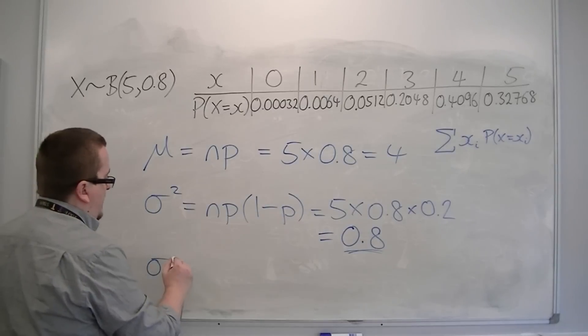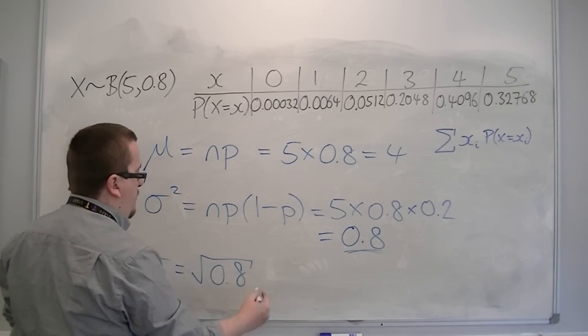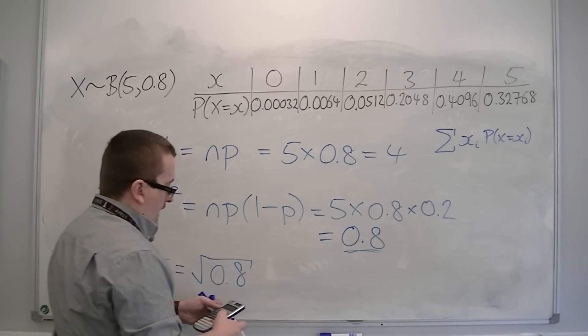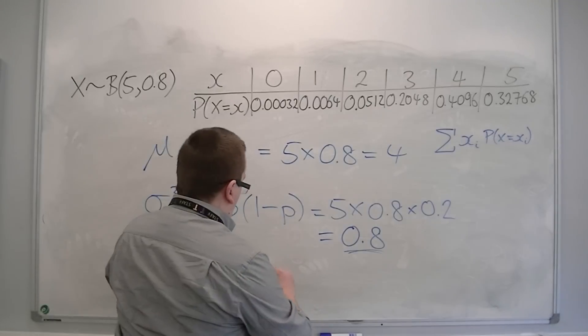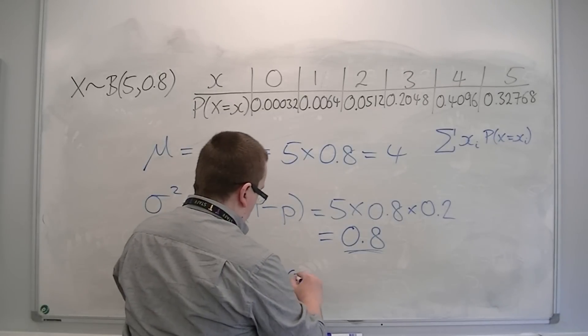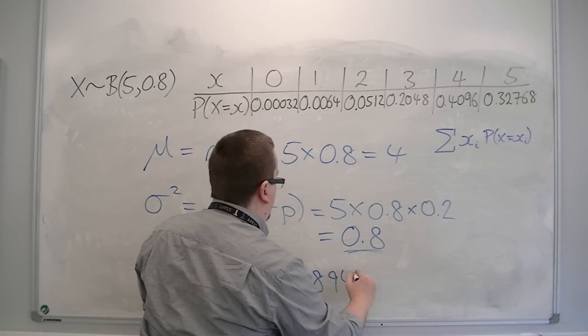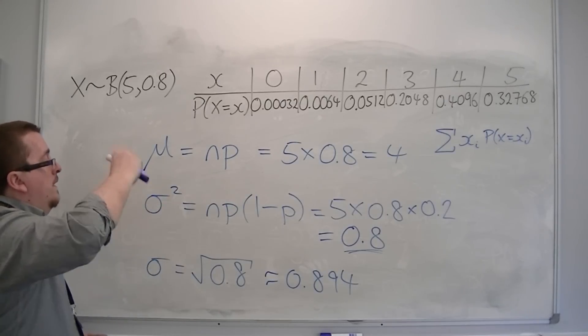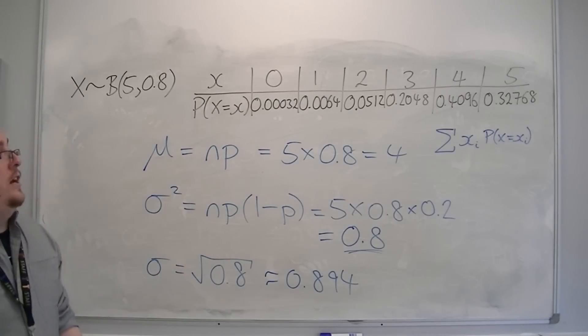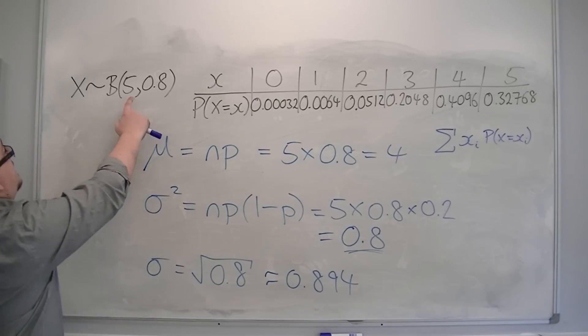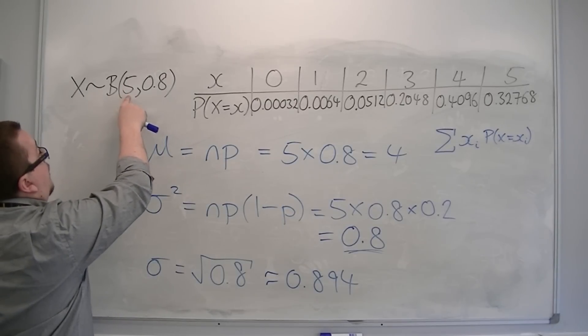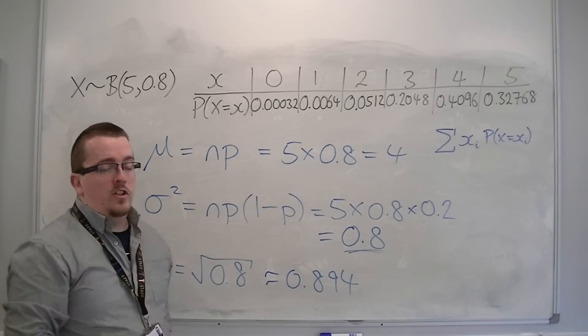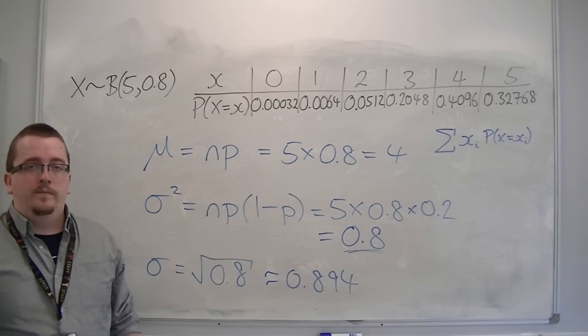The standard deviation is the square root of variance 0.8. The square root of the answer is 2 fifths root 5 or approximately 0.894. That's how we can calculate the mean, the variance and the standard deviation of a binomial distribution. All you need to know is the number of trials and the probability of success and then you can substitute them into the formulas given to you.